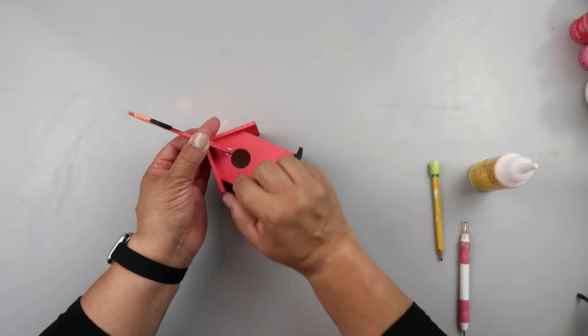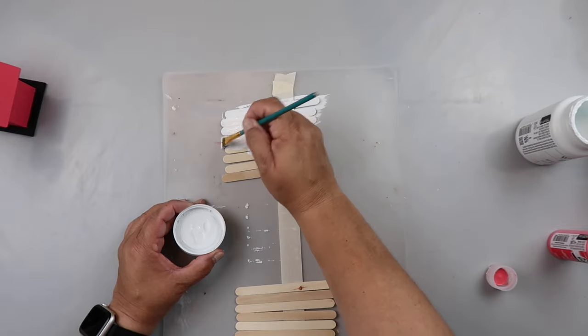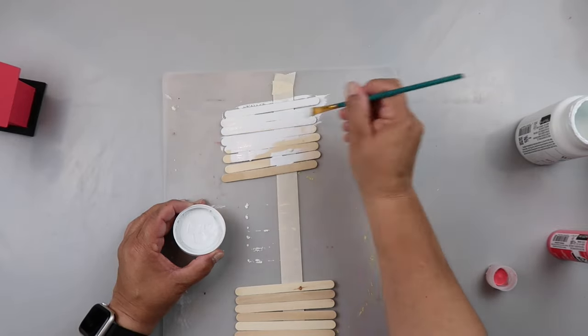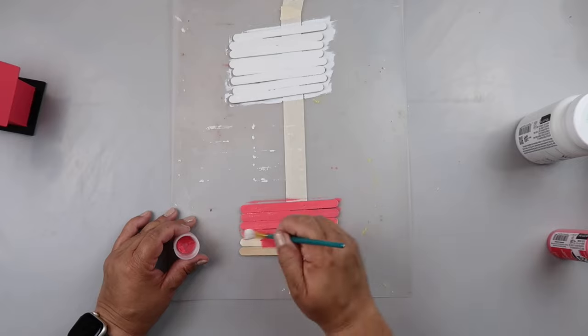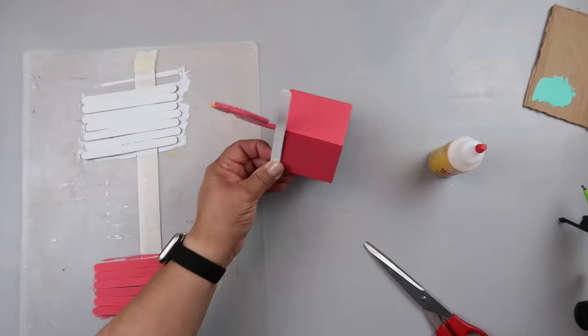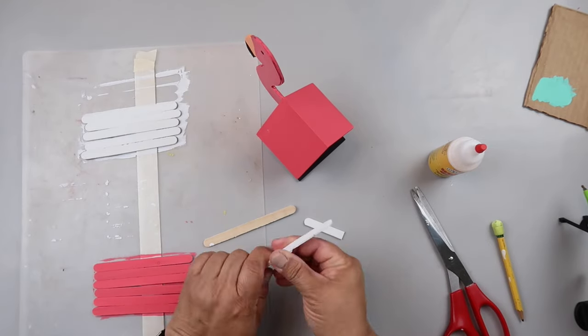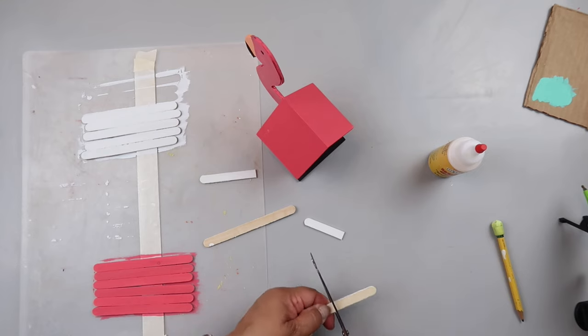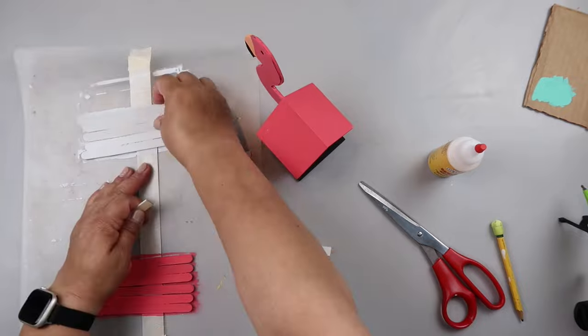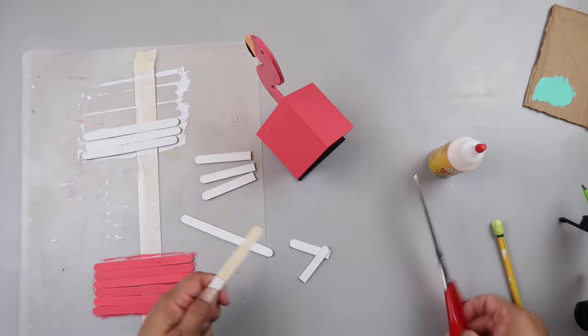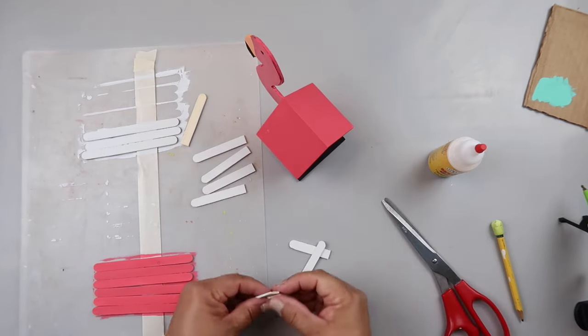Then I took some more craft sticks and I think I have seven of each and I'm painting half of them with the snow white color and the other half with the pink melon color. I decided the birdhouse looked a little bit too plain, so I'm going to add this little roof decor. I'm making a different roof out of these craft sticks and I'm just cutting them all down to size and I do save the sticks.